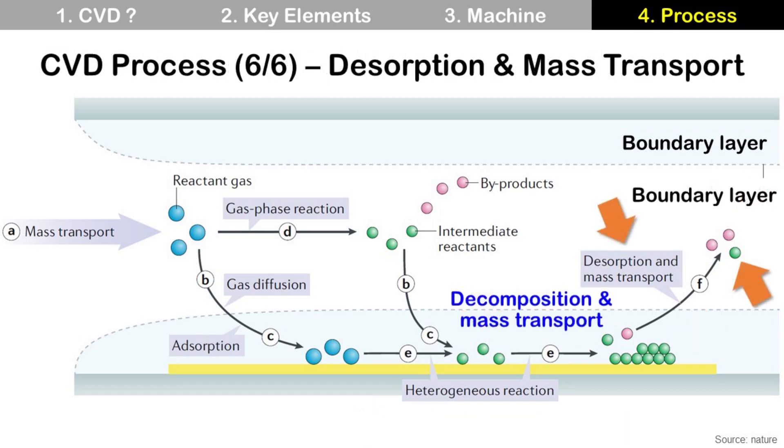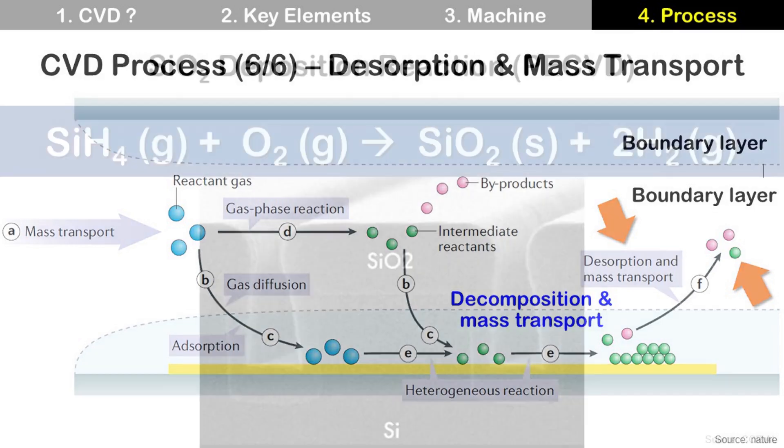Step F, desorption and mass transport. Byproduct and unreacted species are desorbed from the surface and forced out of the reactor as exhaust.